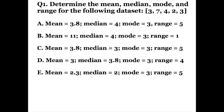Let's start off with the mean. Remember, the mean means the average. To find the mean of the data set, we're going to need to add up all of the numbers in the data set. We're then going to take the sum and divide it by the total number of numbers in the data set. We have five numbers in the data set, so we're going to add all these numbers up and divide by five.